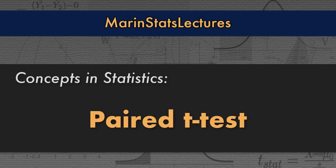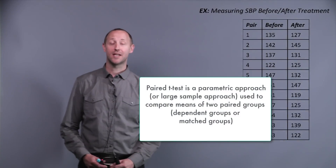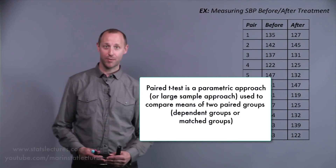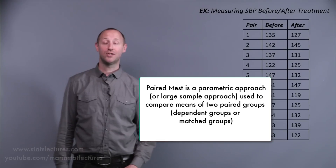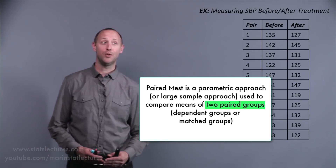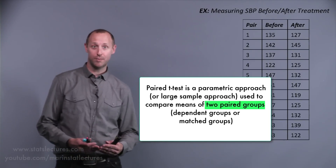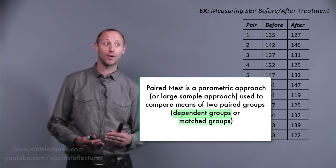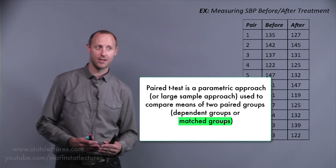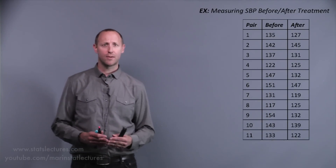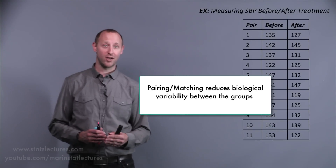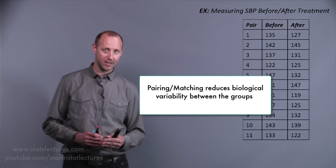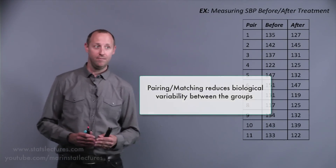We're going to introduce the paired t-test. The paired t-test is a parametric approach, or a large sample approach, that's used to compare the means of two paired groups — also referred to as dependent groups or matched groups. The reason for pairing or matching is that it reduces the biological variability between the two groups.